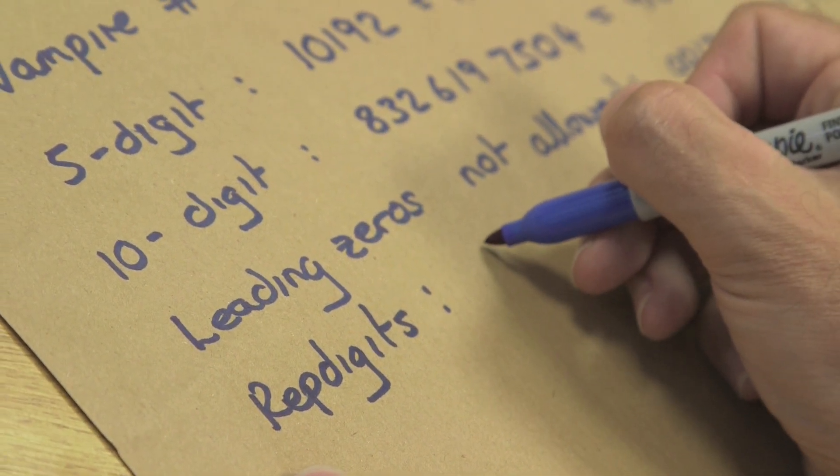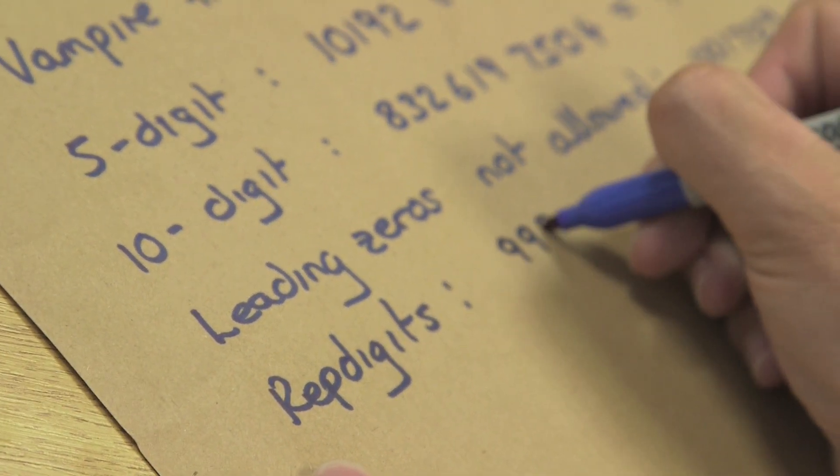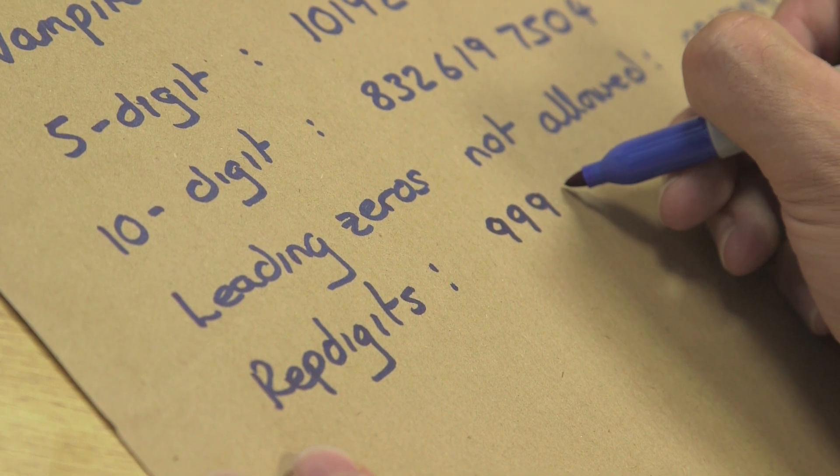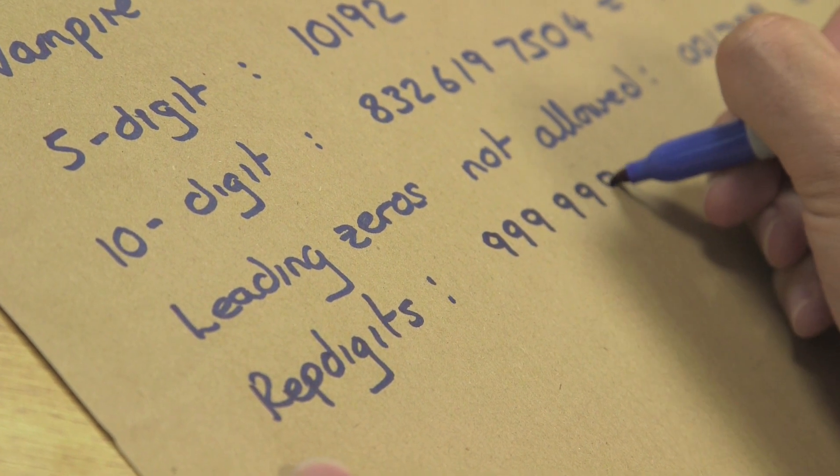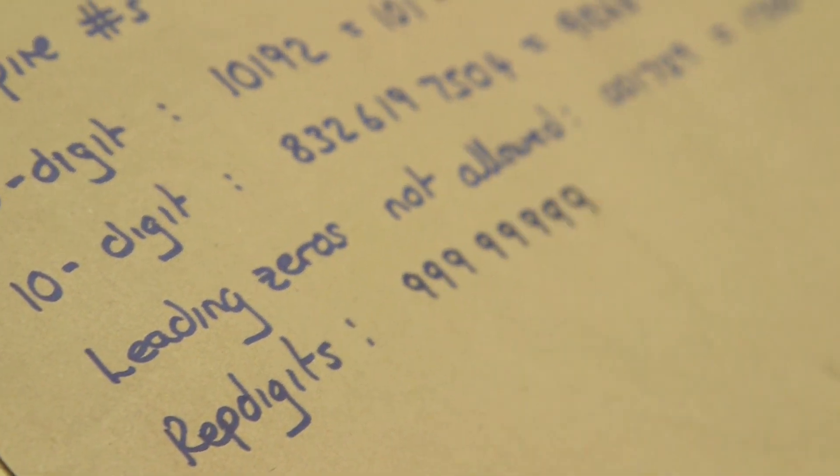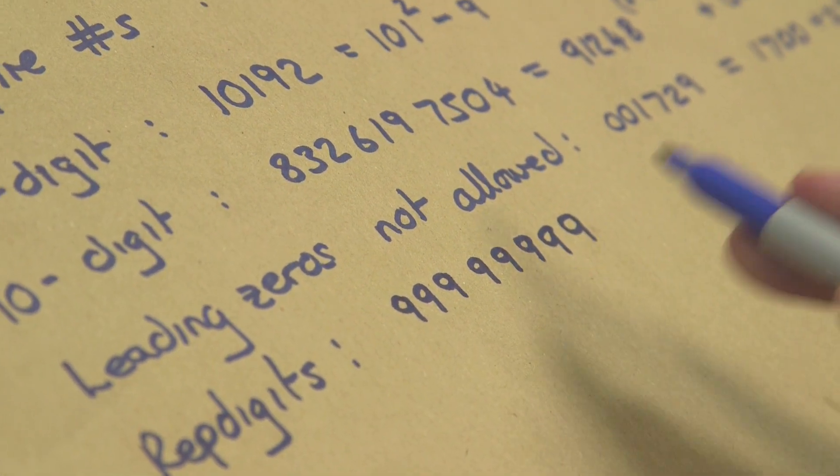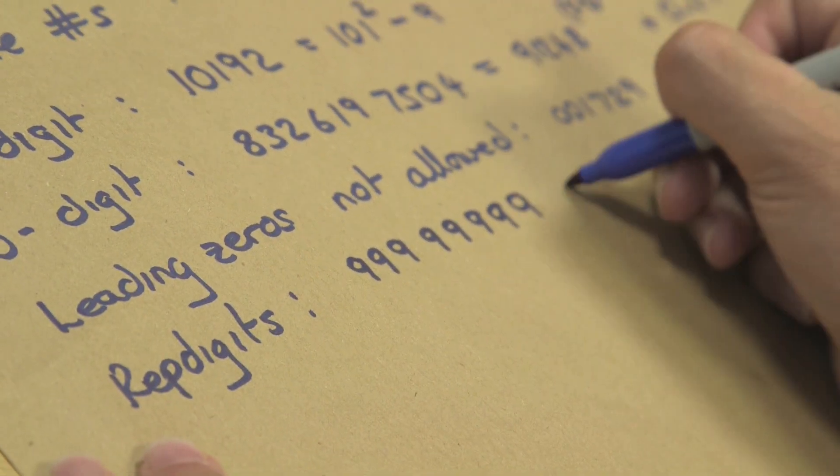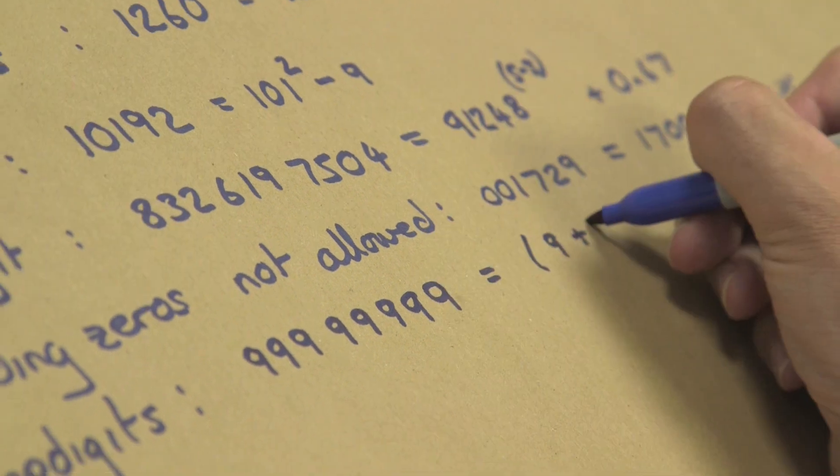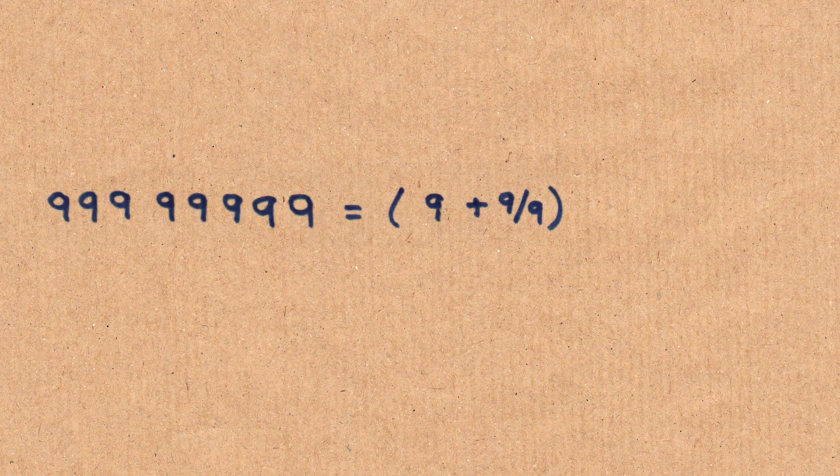Rep-digits. And the smallest is eight 9's: 99999999. And it's made up of 9 plus 9 over 9 to the power of 9 minus 9 over 9, minus 9 over 9.